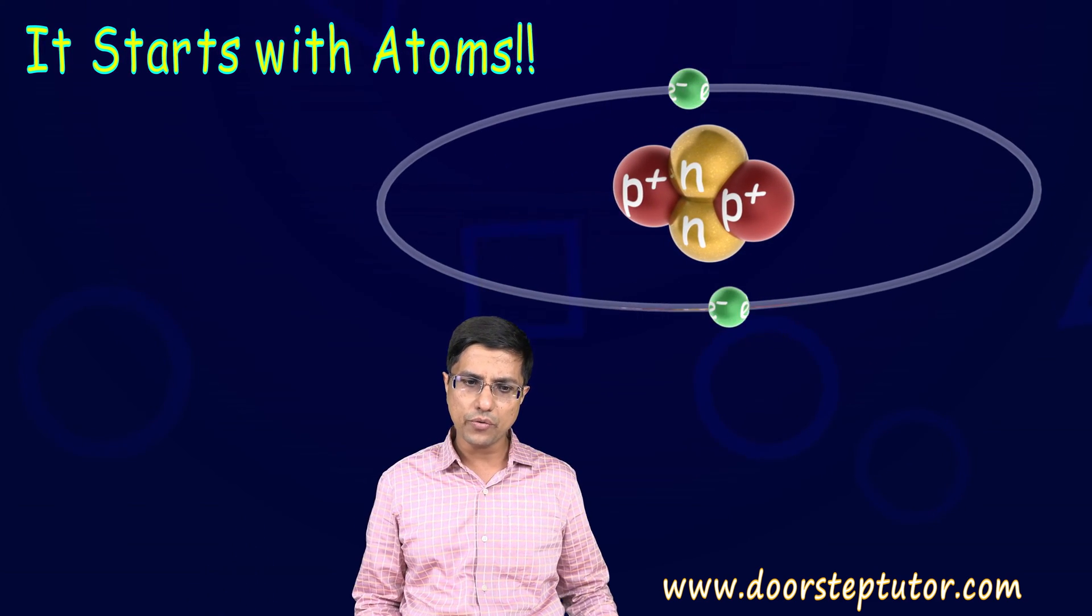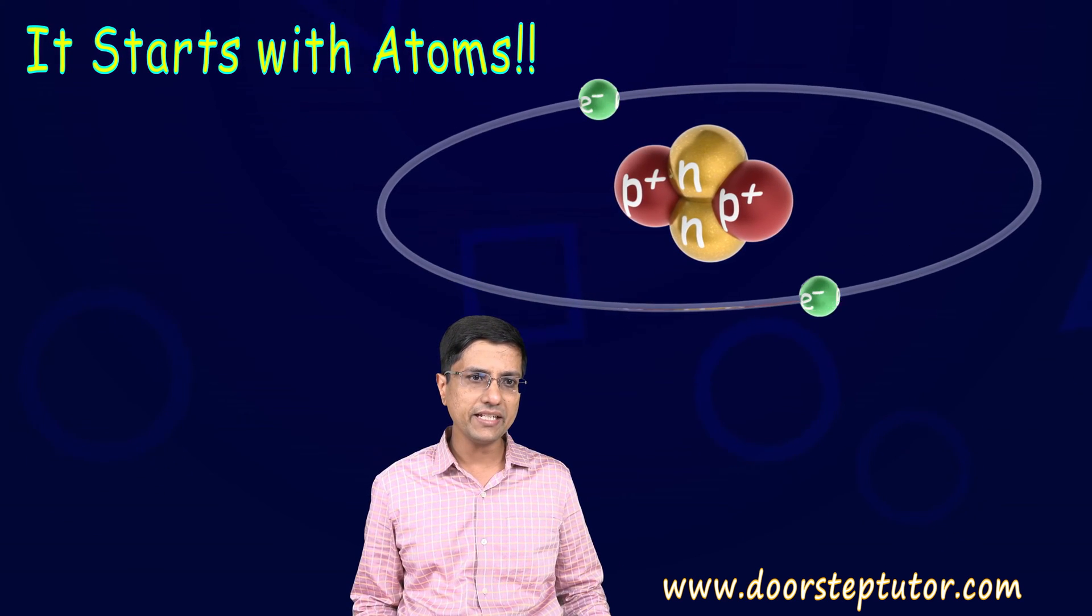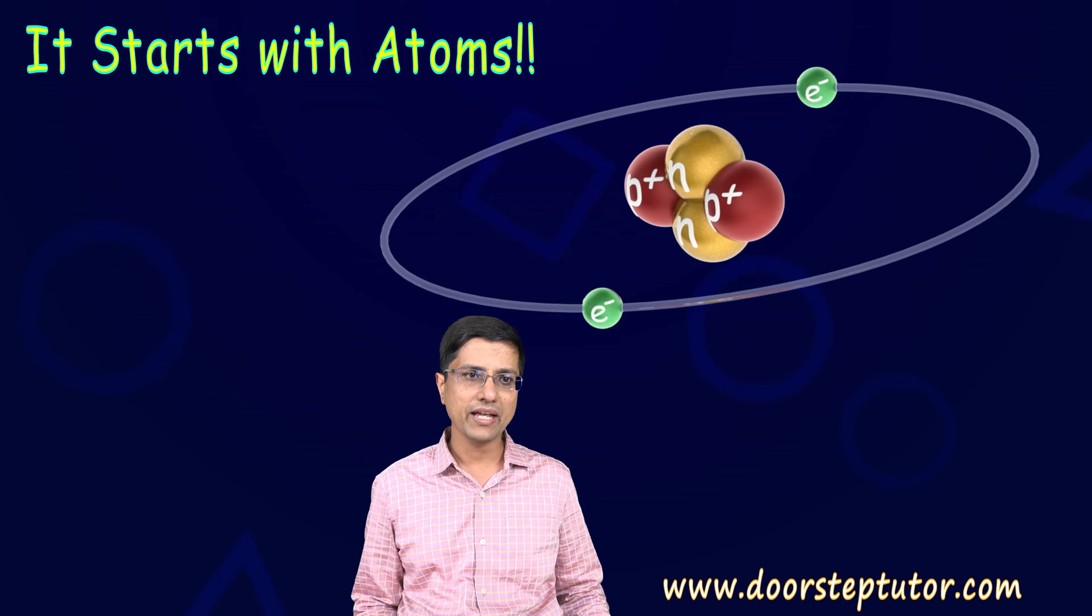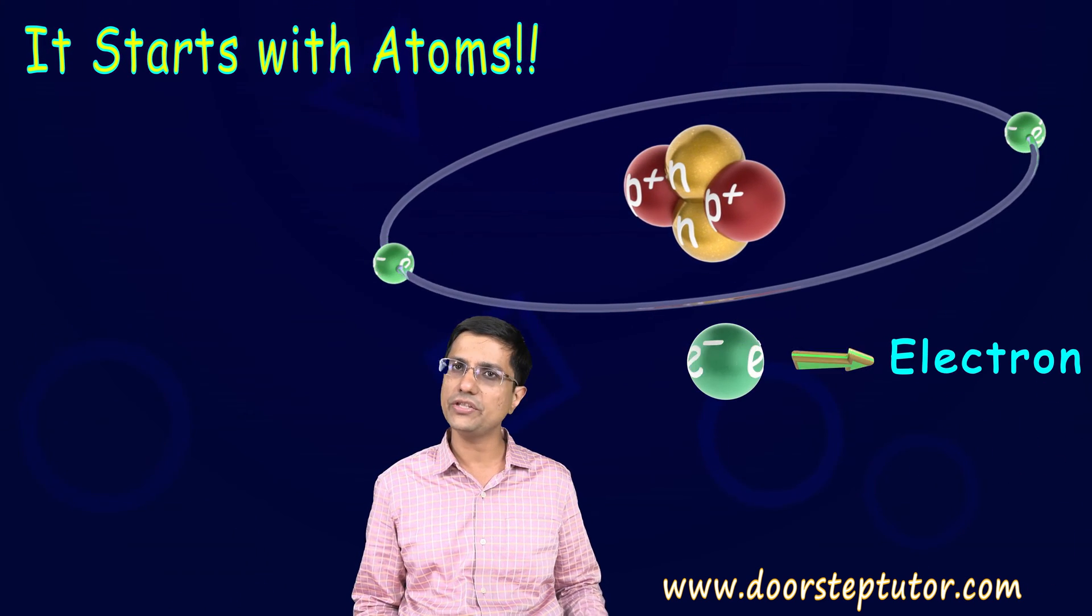You might already know that this atom is made up of two basic components. There is a nucleus at the center and then there are these electrons which go around this nucleus.